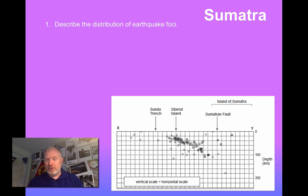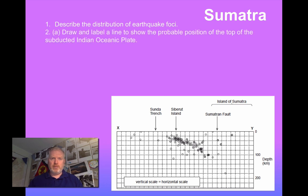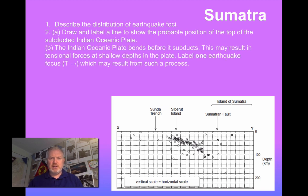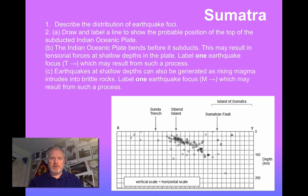There are though some, they're progressively getting deeper. There are also some other ones at shallow depth to the east of the Sunder Trench and underneath the island of Sumatra also. To draw and label a line show where the top of the subducted Indian plate is. And also the fact that it bends before it subducts. And where this magma is.